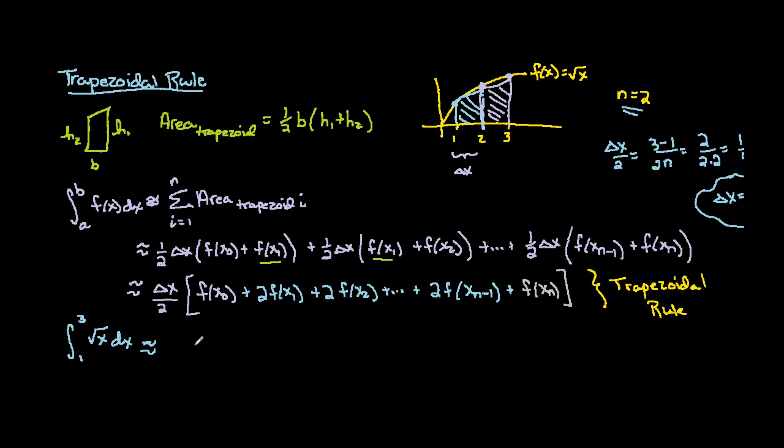Okay, so we have 1 fourth out in front. And then we're going to have f of x sub 0, so that's going to be f of 1, plus 2 times f of 2, plus f of 3. That's our last point. And when we work that out, that's going to be 1 fourth, and f of 1, well our function is just the square root function, so it's going to be square root of 1, and then 2 times the square root of 2, plus the square root of 3.